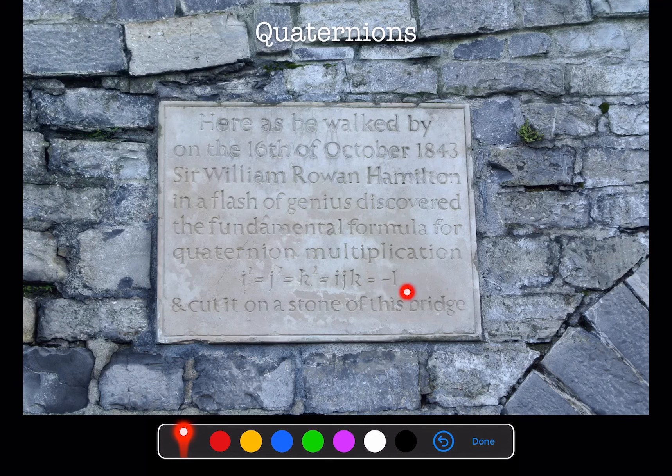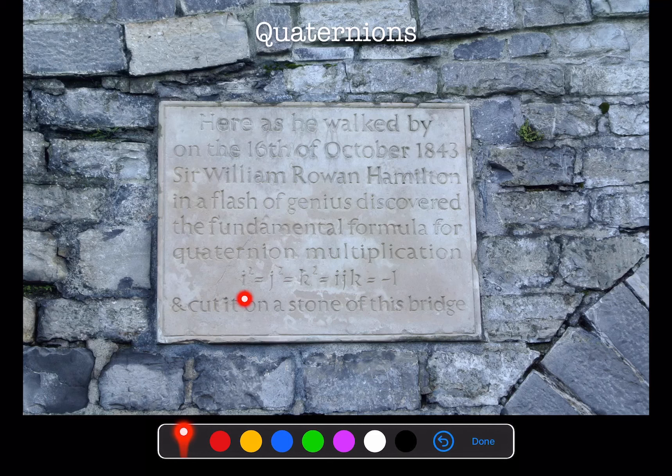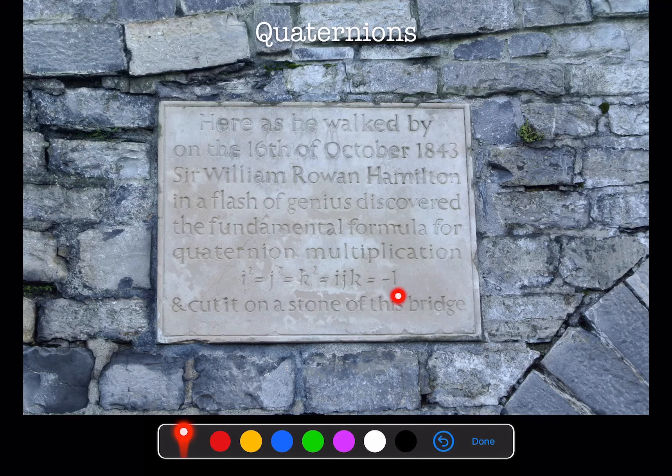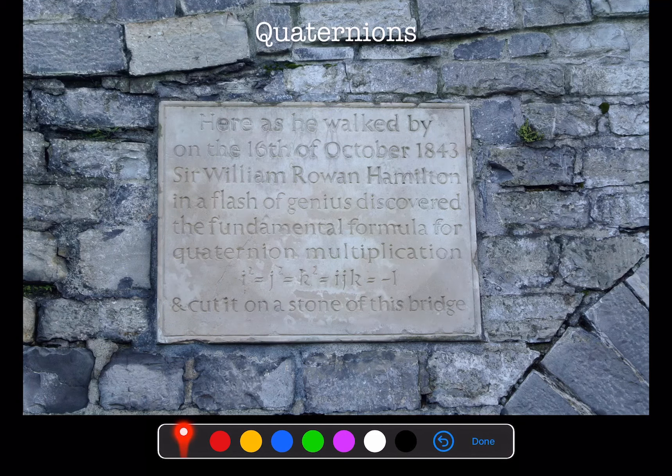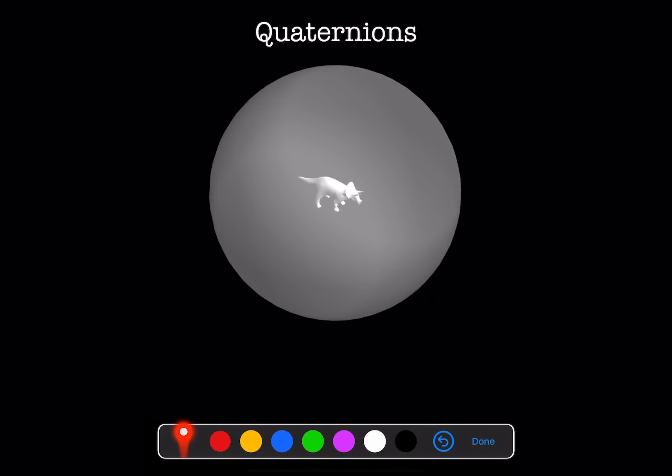This here is the fundamental formula for quaternion multiplication. i squared is equal to j squared is equal to k squared is equal to minus one. And the product i j k is also equal to minus one. So we'd like to understand what this means in terms of rotations.